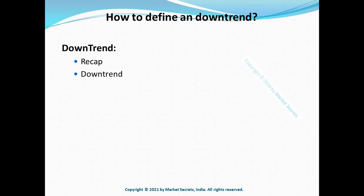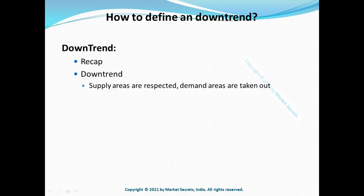In this episode we are going to see the rules to define and identify a downtrend. When it comes to a downtrend, what we look for is that identified supply zones above the current price are respected, and in the process of price moving down it should have taken out the demand zones. In simple terms, supply area should be respected and demand area should be taken out.